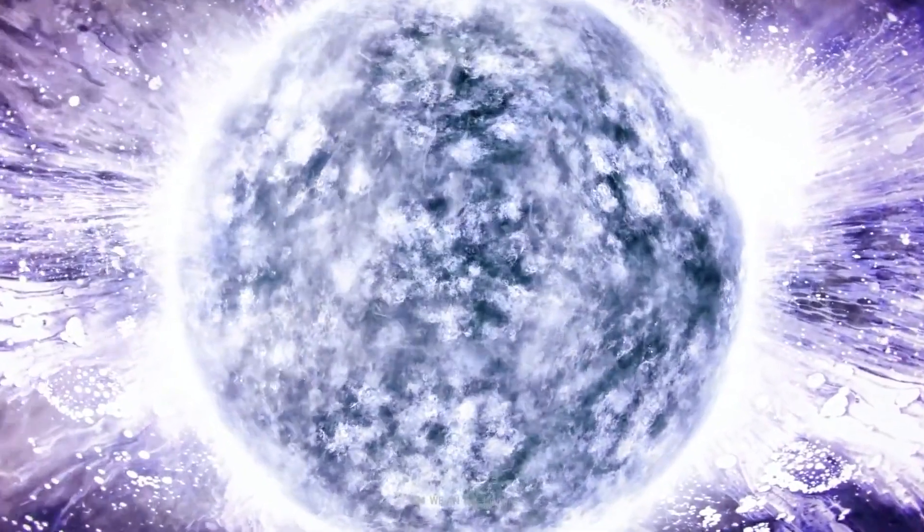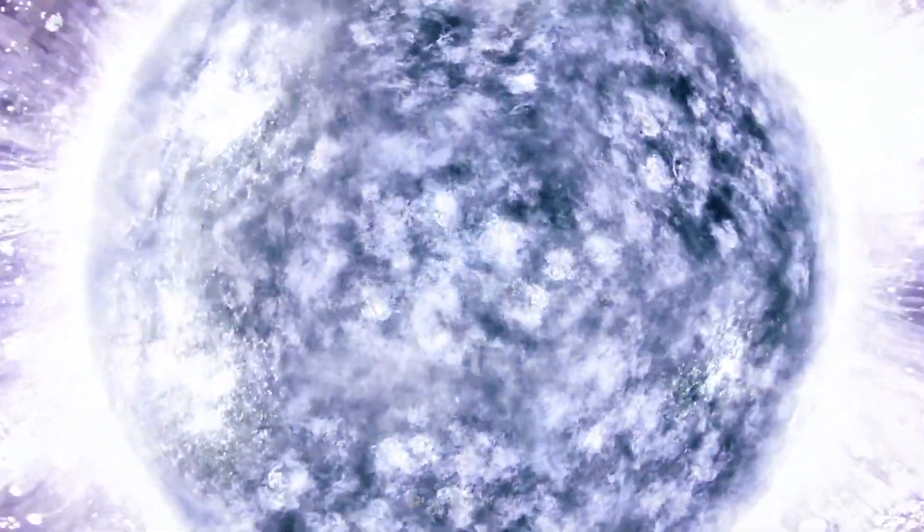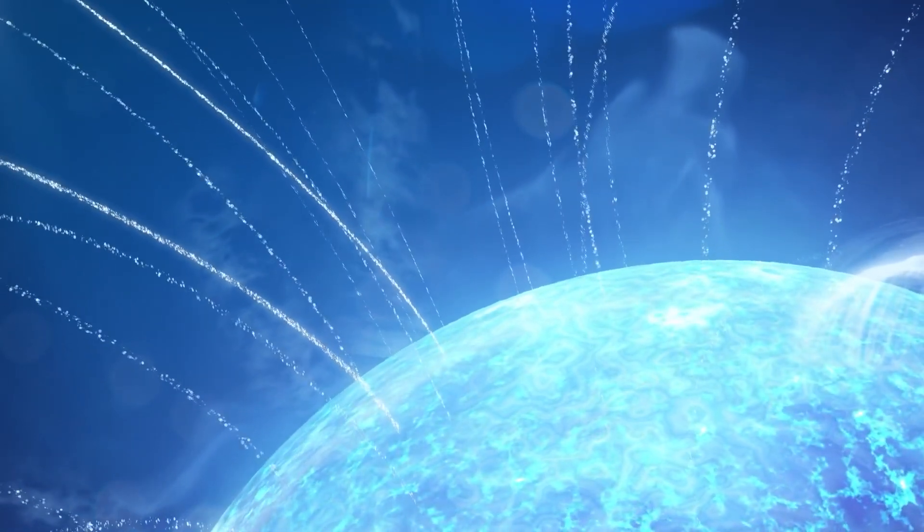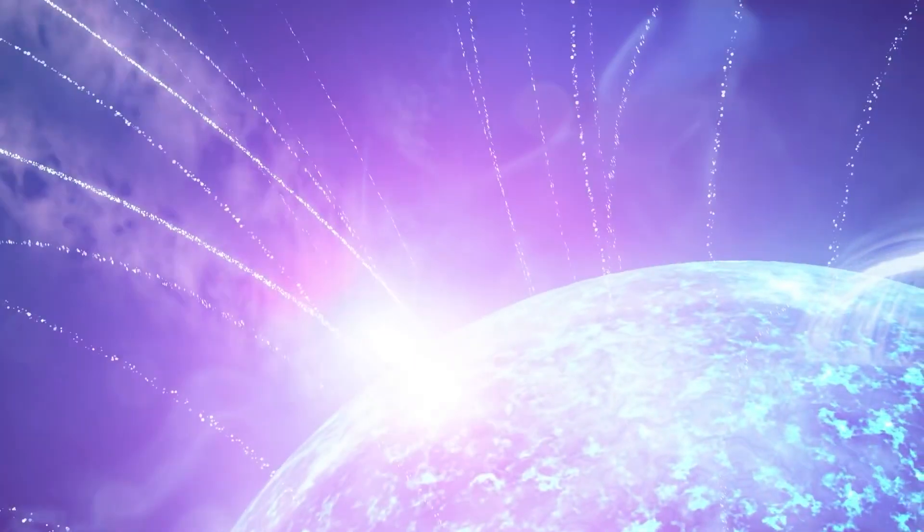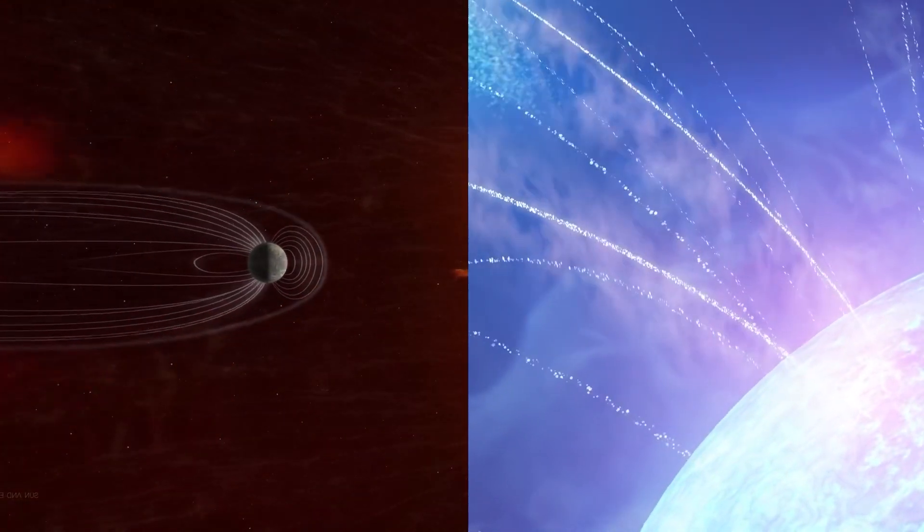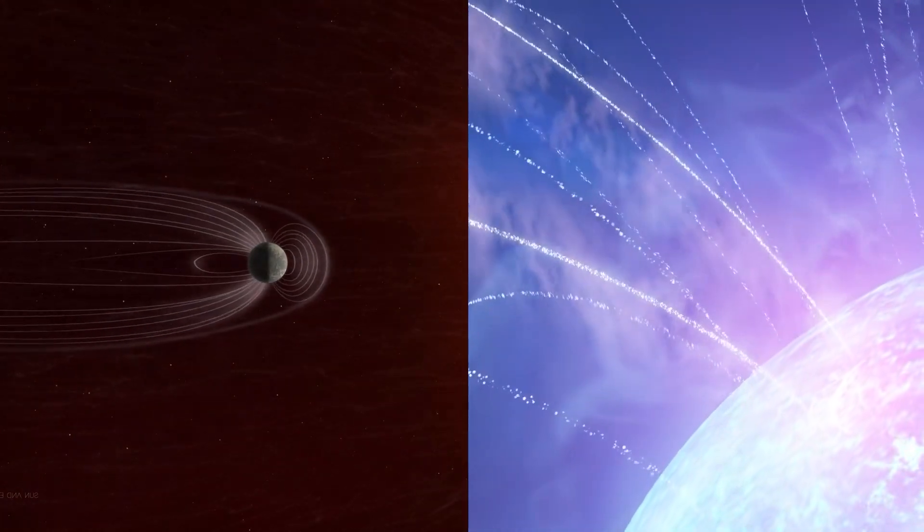One remarkable demonstration of a magnetar's extreme power occurred in 2004, when a flare on the surface of one of these stars was so potent that it affected the Earth's magnetic field from a staggering distance of 50,000 light-years away.